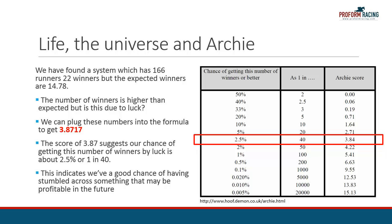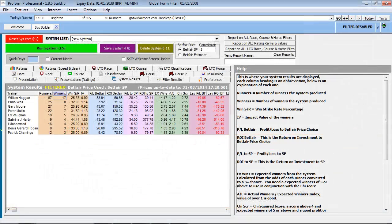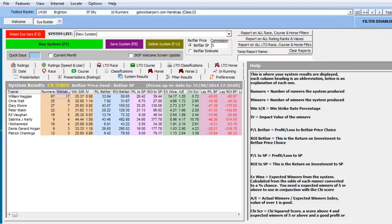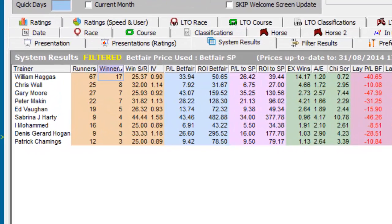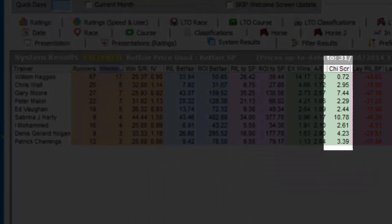This indicates we've got a good chance of having stumbled across something that may be profitable in the future. Let's see how the Archie score is used in the ProForm Professional System Builder. With the System Builder open, Archie scores — or in ProForm terminology, Chi score — are found in this column.